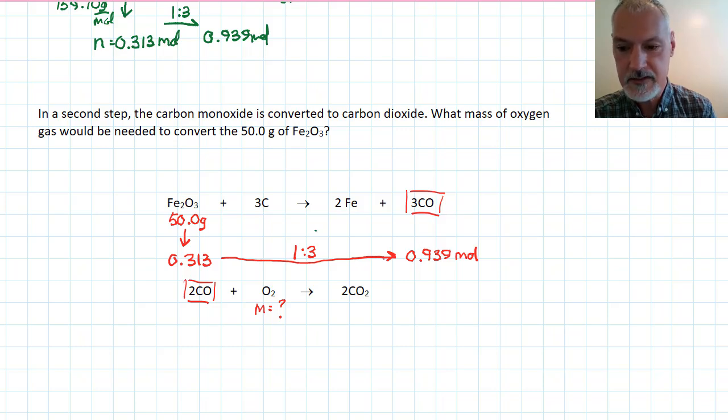I'm now going to take this number and bring it down here. And now I use the ratio that exists between these two, which is 2 to 1. So, that's going to give me half that number, 0.457 moles.